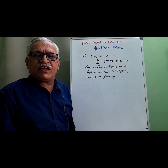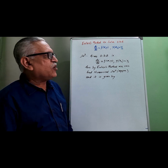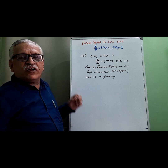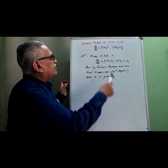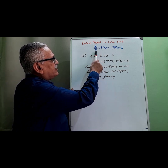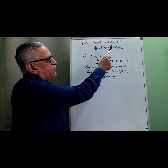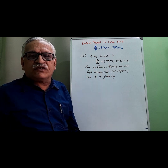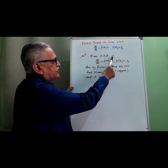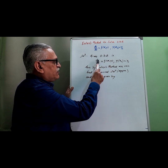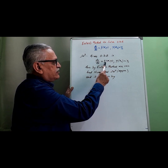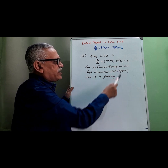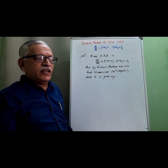Hello friends, presenting my video on Euler's method to solve ordinary differential equations. It is given as dy by dx is equal to f of xy, with the condition y at x0 is equal to y0.